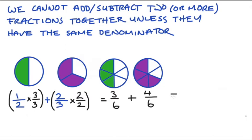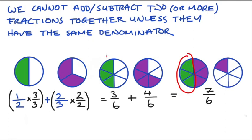So now we have our fractions in terms of a common denominator, we can just add them up. So 3 plus 4 is equal to 7, so we get 7 over 6. Looking at our circles, we can see that 3 of those 6 come from our first fraction, and 4 of those 6 come from the second fraction.